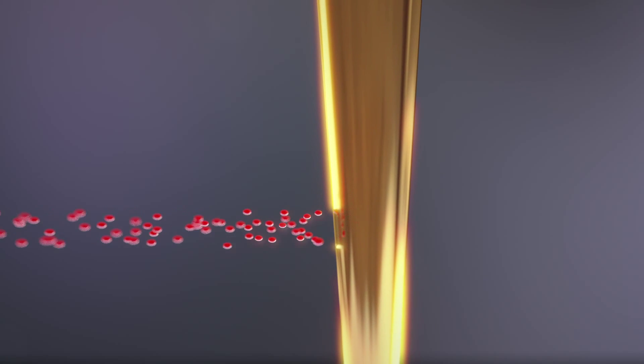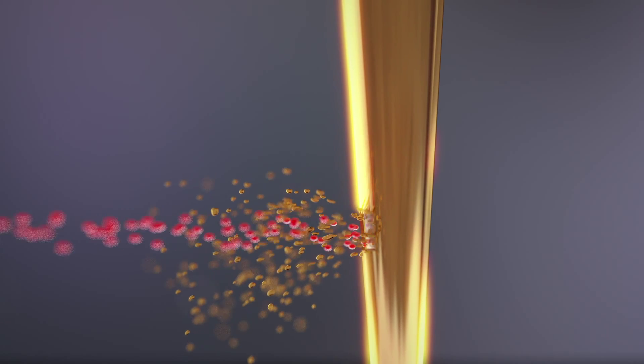A focused ion beam is then used to locally remove the metallic coating and part of the underlying material, thus opening small optical windows along the taper. This allows guided light to outcouple in the surrounding media at specific points.